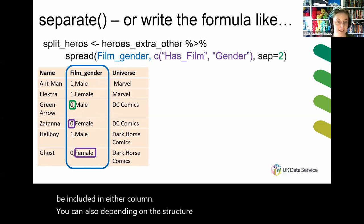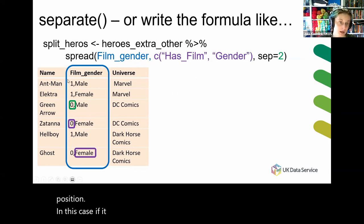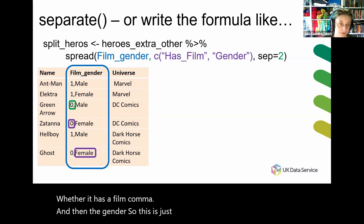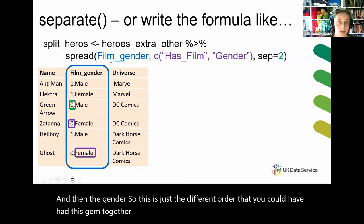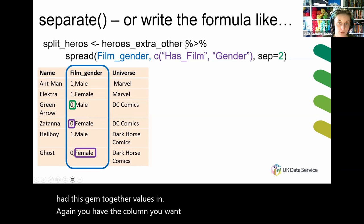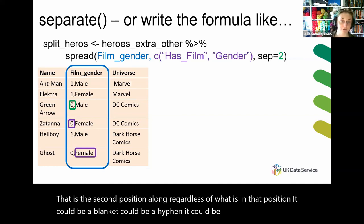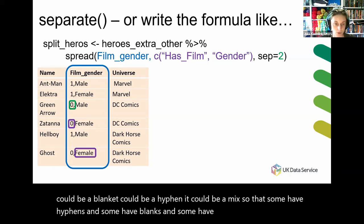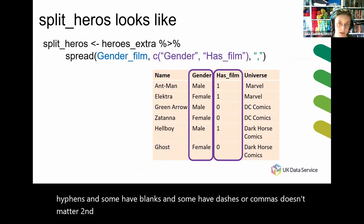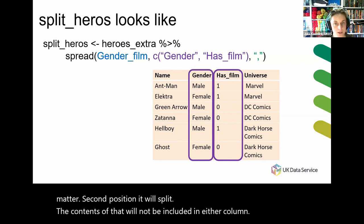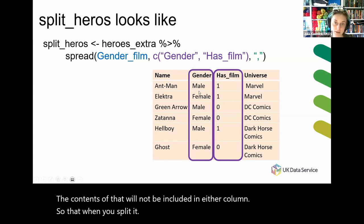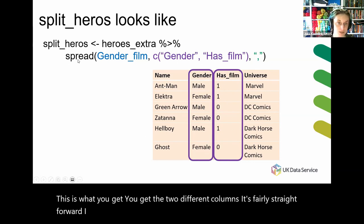You can also, depending on the structure of your column, split at a position. In this case, if it had been whether it has a film, comma, and then the gender — a different order of jammed-together values — again you have the column you want to split, followed by the names for the columns you want to create, and you indicate the position. You will separate them at position two — the second position along, regardless of what is in that position. It could be a blank, a hyphen, a mix of hyphens and blanks and commas — it doesn't matter. At the second position it will split, and the separator character will not be included in either column. When you split it, you get the two different columns. It's fairly straightforward.